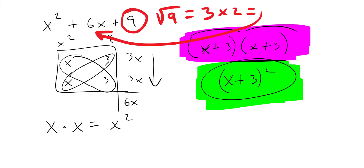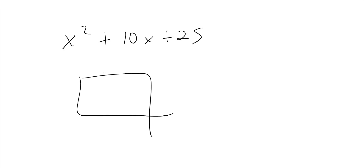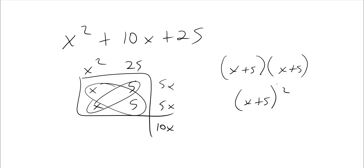Let's do another problem. If I get x squared plus 10x plus 25, you're going to factor that. You get x squared, you get a 25, 10x here. So this is x and x, and this is 5 and 5, which works out — 5x and 5x is 10x. So x plus 5, x plus 5, which is x plus 5 quantity squared.